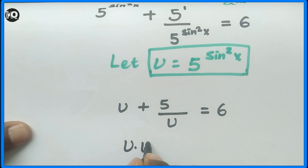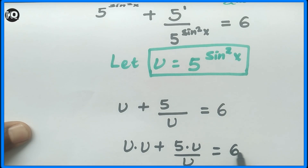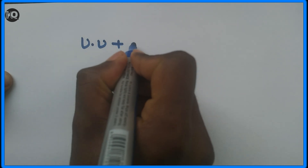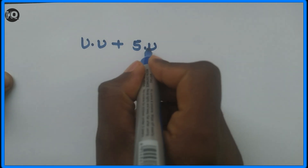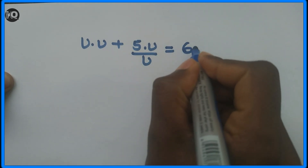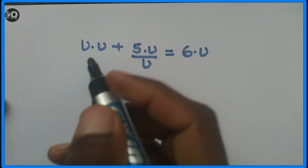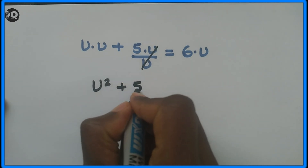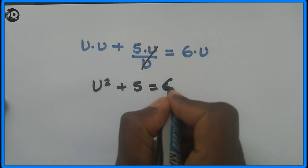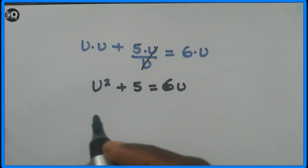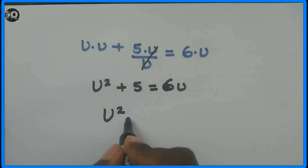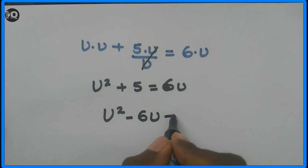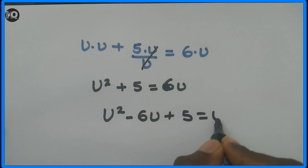Multiplying both sides by u gives u times u plus 5 equals 6u. Expanding, we get u squared plus 5 equals 6u. Rearranging, u squared minus 6u plus 5 equals 0. We now have a quadratic equation that can be solved by factoring or by using the quadratic formula.